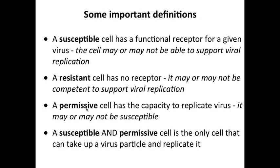A permissive cell has the capacity to replicate virus. It may or may not be susceptible — we can separate these two experimentally. A susceptible and permissive cell is the only cell that can take up a virus particle and allow it to replicate. Susceptible refers to having a receptor for the virus; permissive or permissivity refers to the ability or capacity to replicate virus. These are not obvious definitions — they're almost arbitrary; you could have reversed them. But this is what we have, and we have to memorize these two. In fact, many virologists get this wrong; I've seen papers where they mix this up, unfortunately.